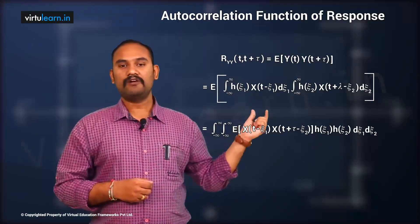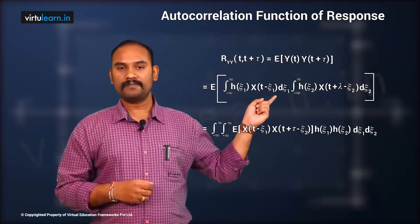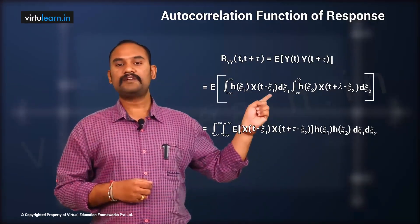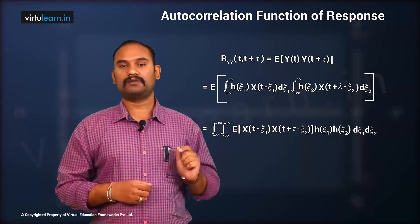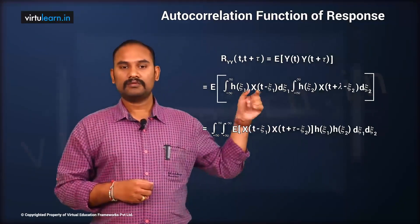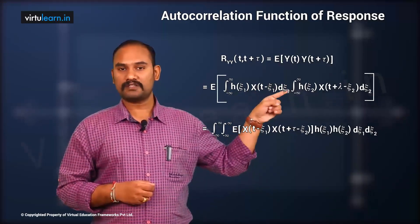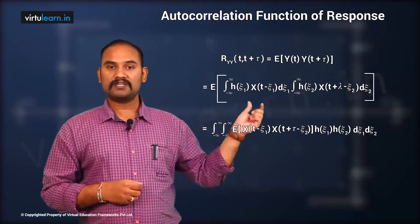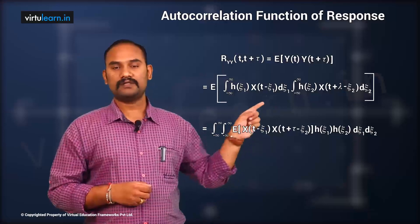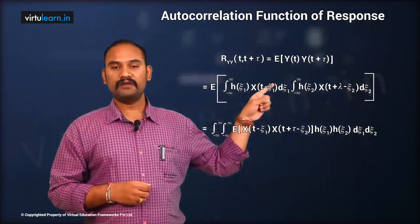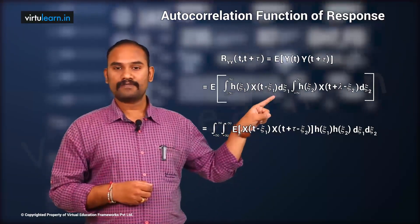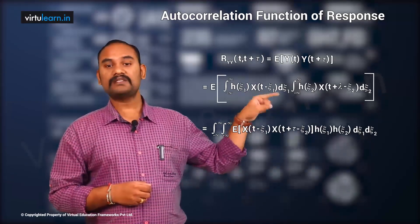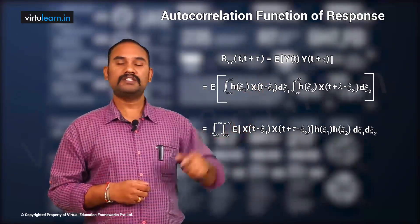We substitute: E of { integral from −∞ to ∞ of h(ζ₁) · x(t − ζ₁) dζ₁ } times { integral from −∞ to ∞ of h(ζ₂) · x(t + τ − ζ₂) dζ₂ }, where the second integral is y(t+τ) with t replaced by t+τ.